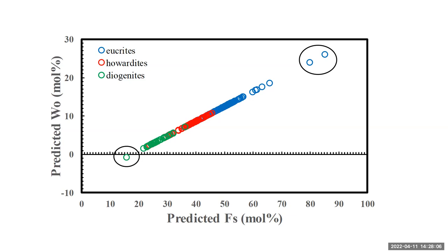The goal of all this was to use the meteorites to test how well we could determine pyroxene mineralogy. For the meteorites, we know so much more than for the asteroids — we can't determine more for asteroids than we can for meteorites. So this is used to find constraints on how well we can determine pyroxene mineralogies for HEDs and then Vestoids.